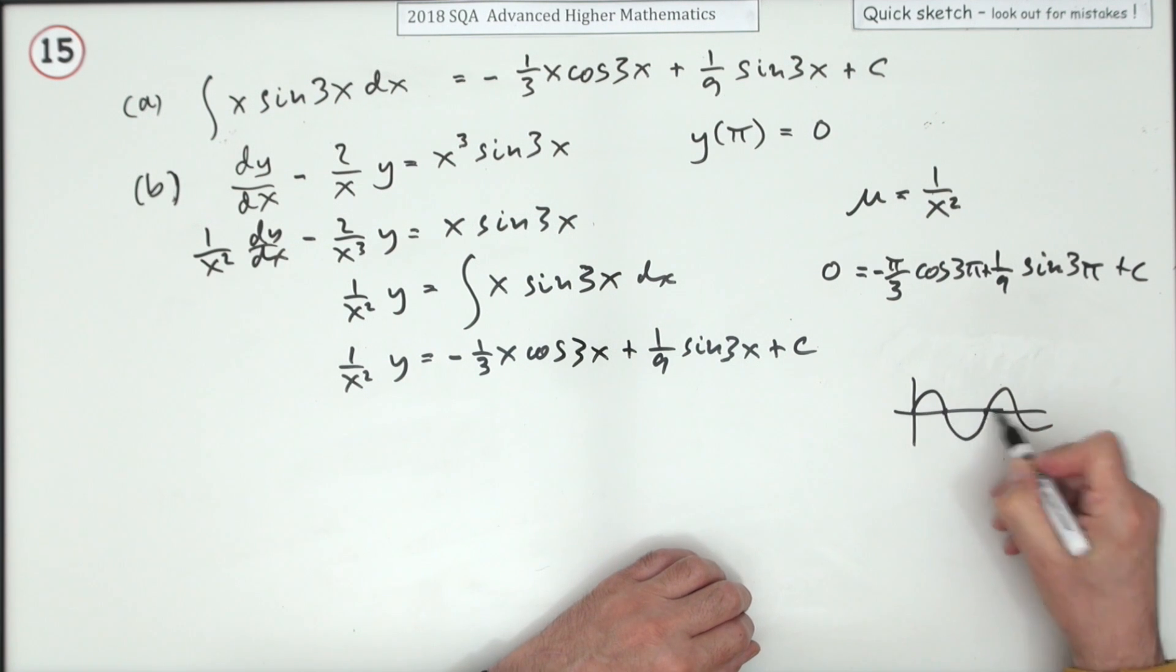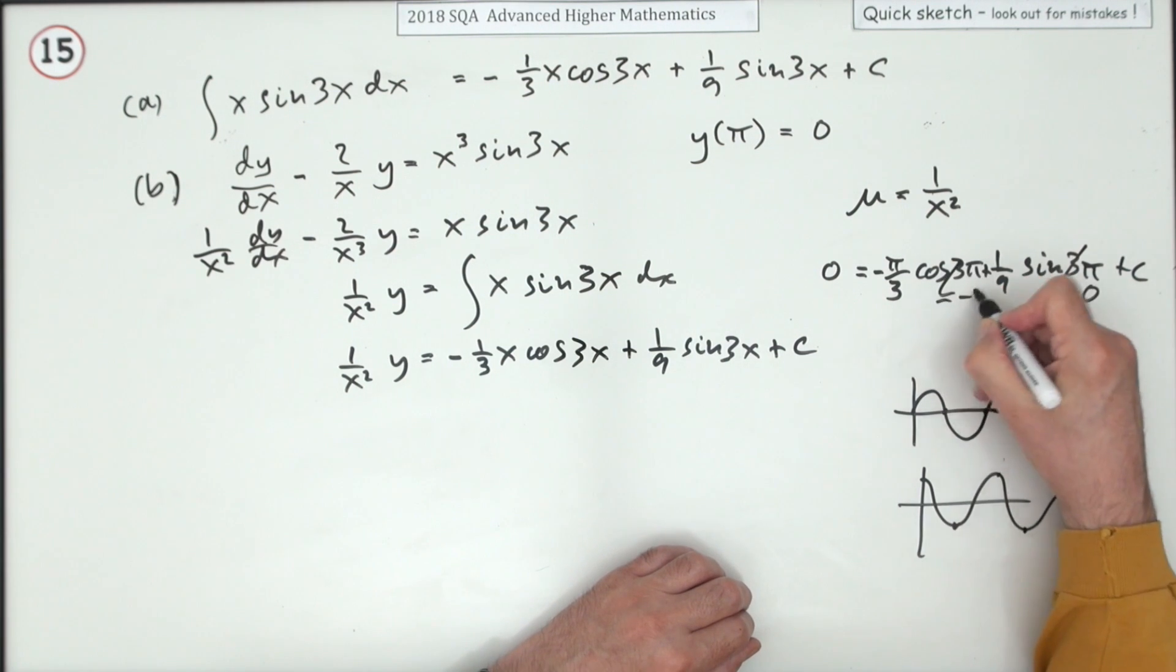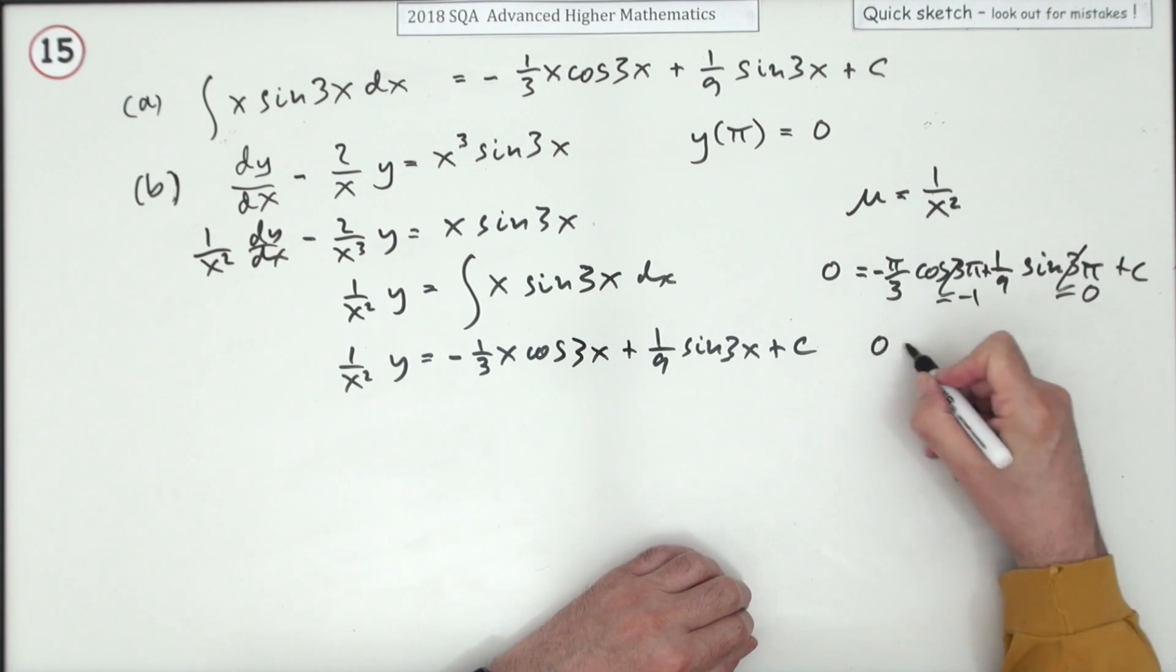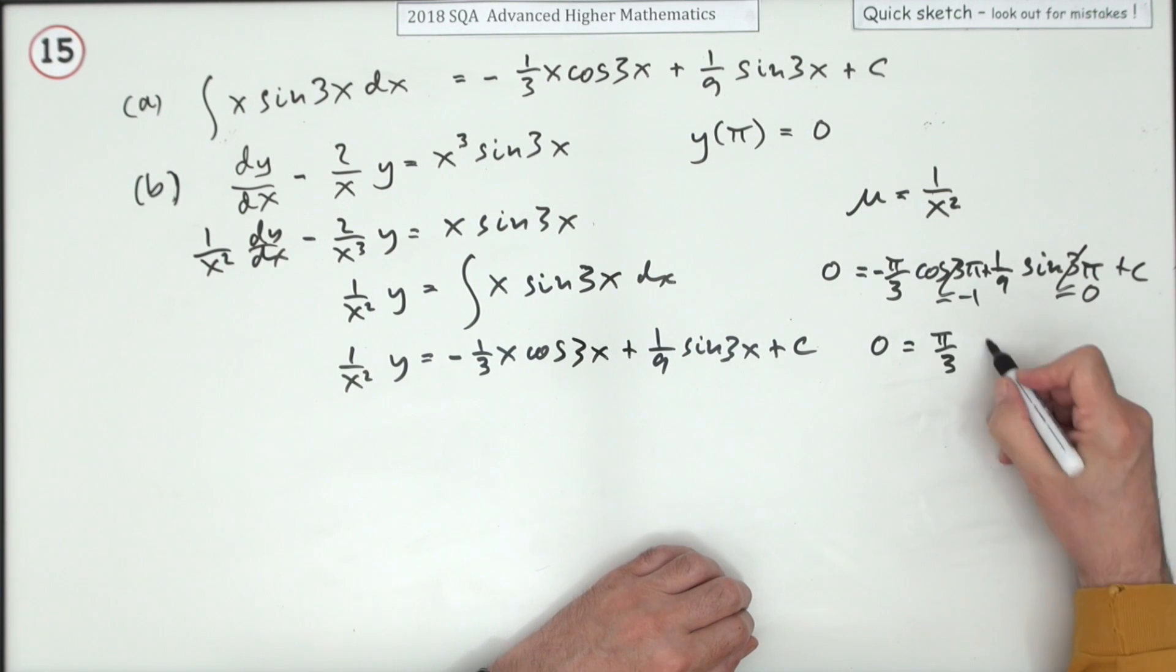1π, 2π, 3π comes to negative 1. So that means 0 is equal to π upon 3 plus c. So c is negative π upon 3.